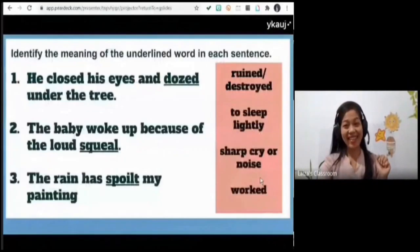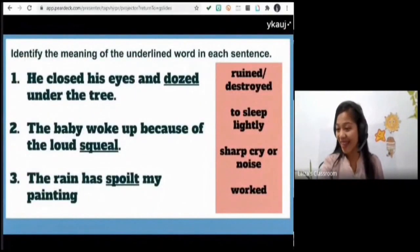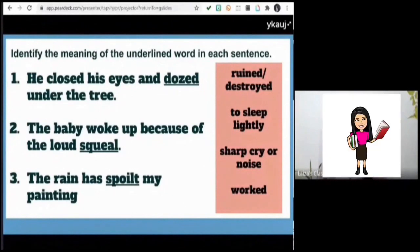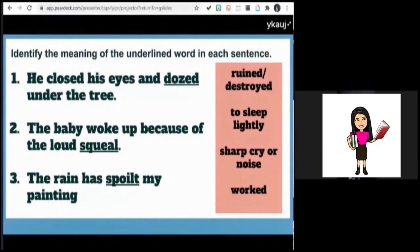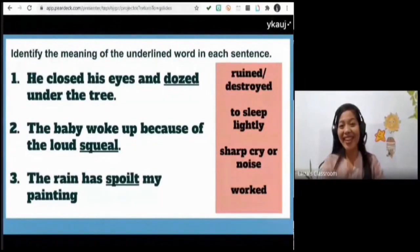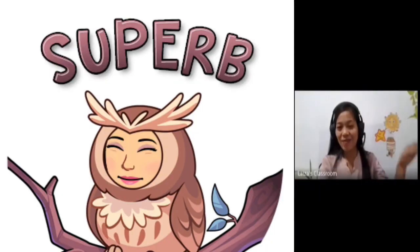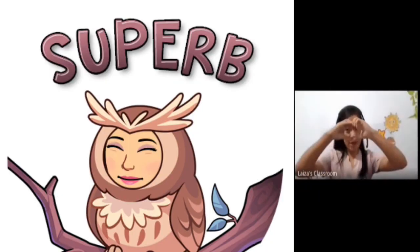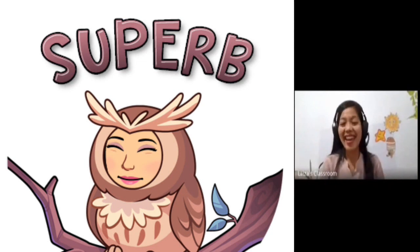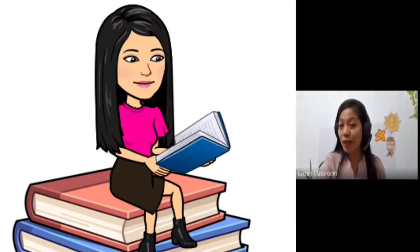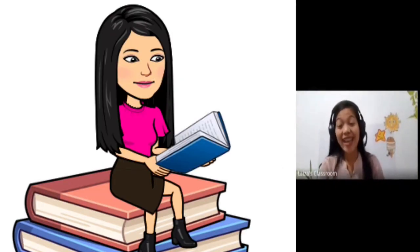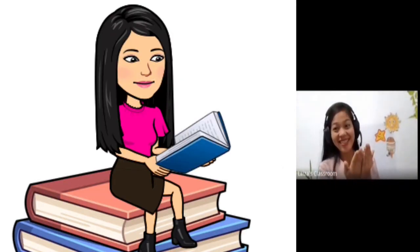Let's move on to the third sentence. Who wants to read and answer? Miss Pasqua: 'The rain has spoiled my painting.' The answer is ruin or destroy — very good! That means ruined or destroyed. Great job! Now that we know the difficult words, let us read the story.